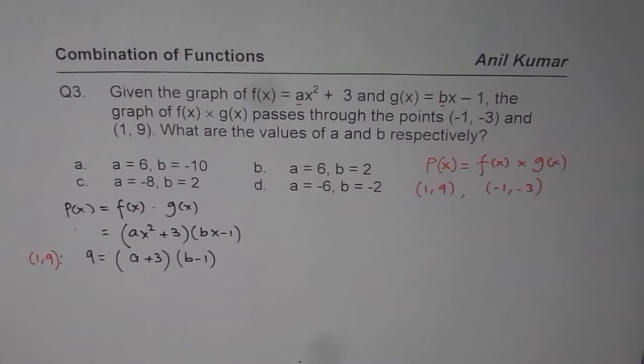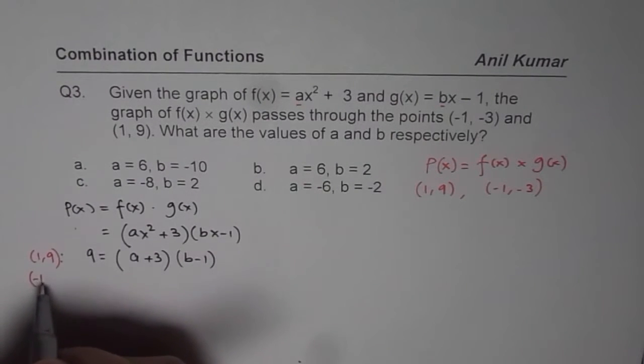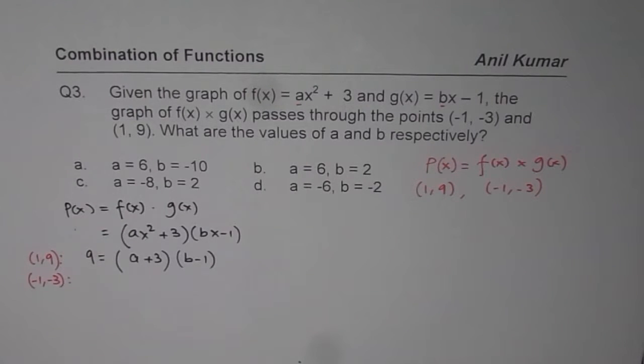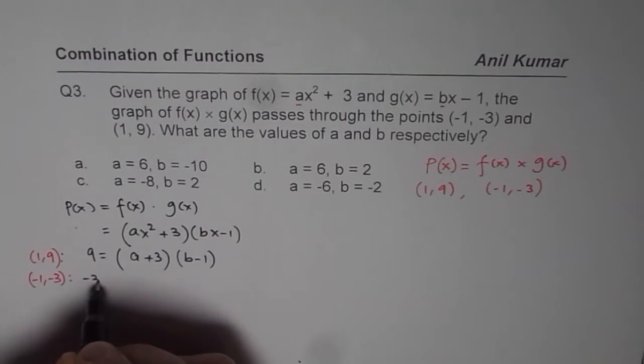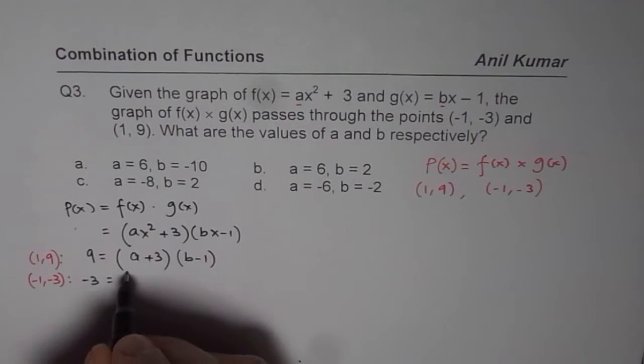If you use the second point, which is minus 1 and minus 3, then what do you get? You will get minus 3 for p of x, the product of the 2 functions.